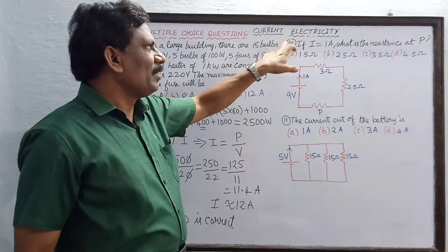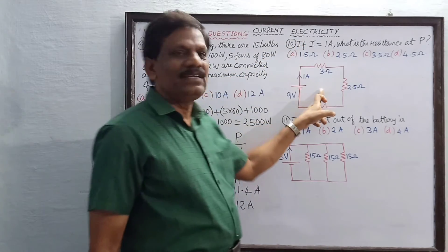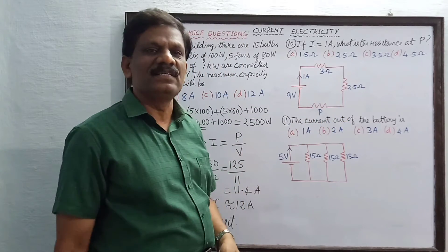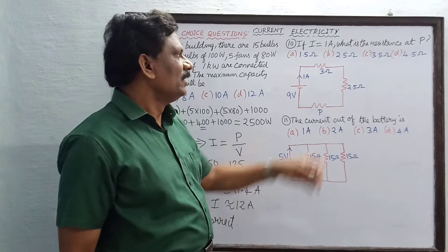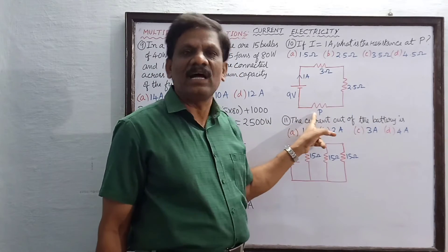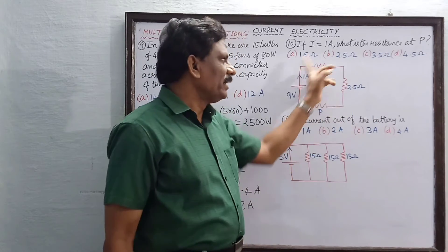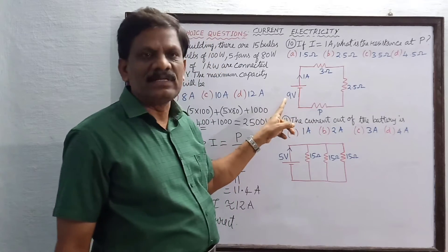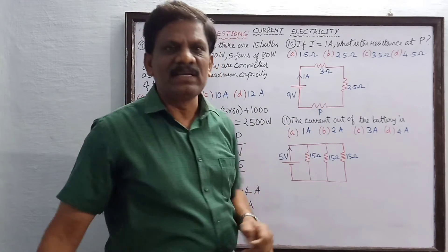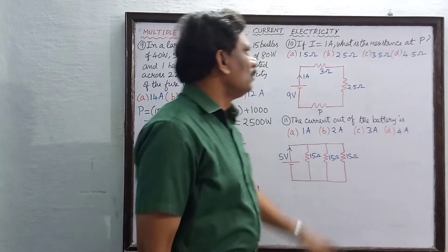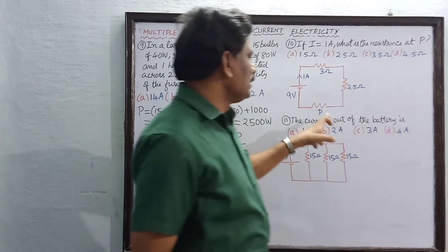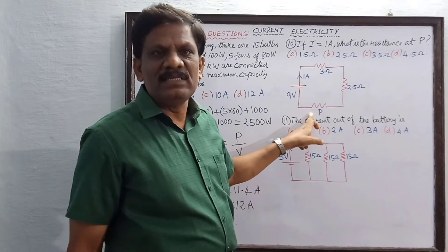Now problem number 10 is based on a given circuit. The circuit consists of 3 resistors in series: a 3 ohm resistor, a 2.5 ohm resistor, and an unknown resistor P, connected to a 9 volt supply. The current supplied by the battery is given as 1 ampere. What is the resistance at P?